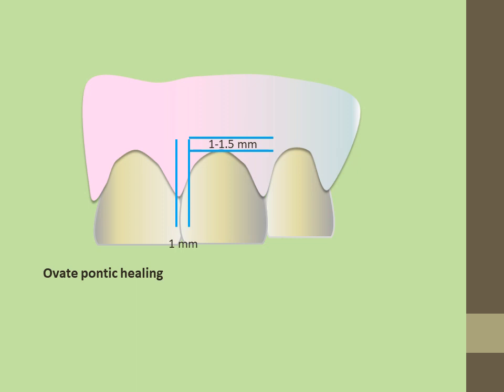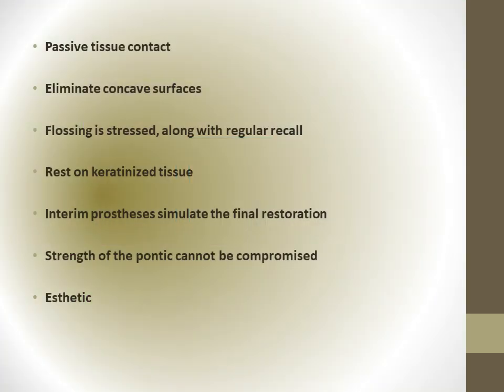The tissue surface of pontics should rest passively without blanching on keratinized tissue. Regular flossing under the pontic is essential for the tissue to remain in a healthy state. One should avoid the creation of concave surfaces. If possible, interim prostheses should simulate the shape of the final restoration as much as possible to allow the patient to adapt to the new restoration and voice any concerns they may have. These pontic designs may generally be used in all areas of the mouth. Particularly in areas of low aesthetic requirement or long spans, porcelain coverage is minimized or even eliminated to enhance the rigidity of the framework.